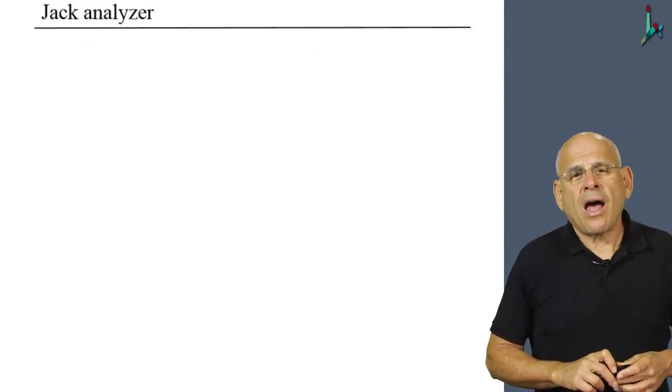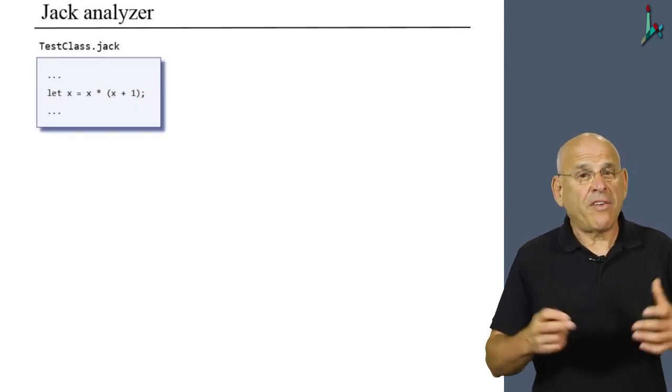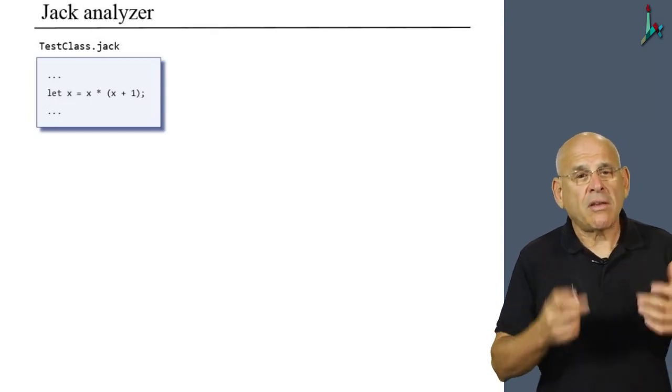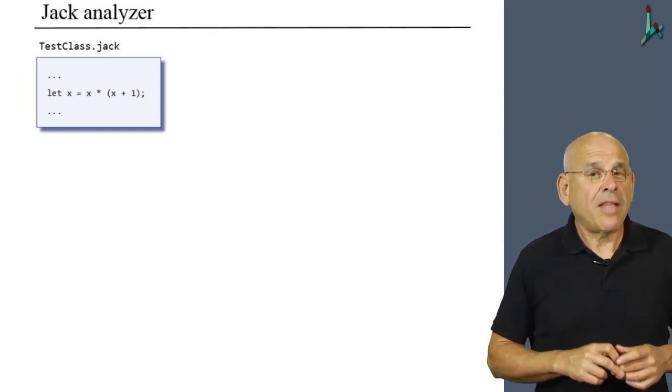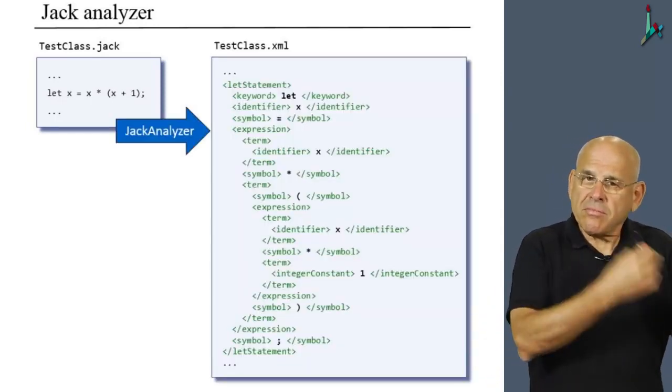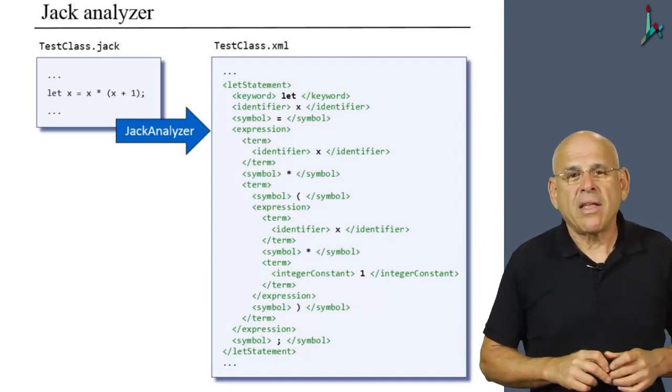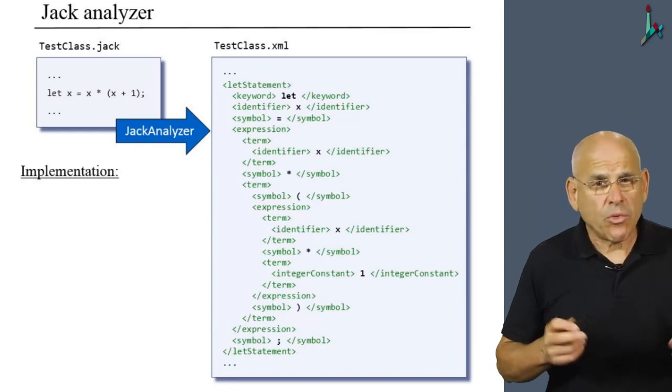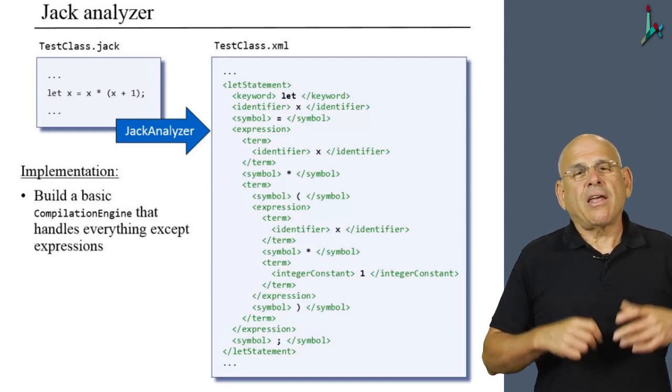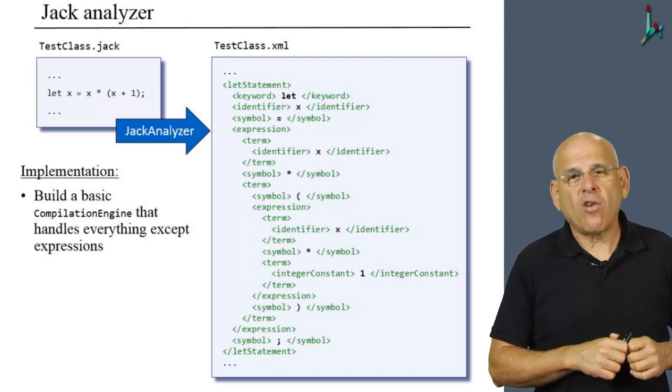Moving along, once we're done with the tokenizer, we have to develop the parser or the overall Jack analyzer. So here's an example of some test program, some Jack code. We have to analyze it or translate it into the XML that you see on the right-hand side. How should we do it? Well, we talked about it all along in this module.